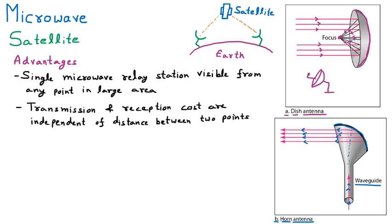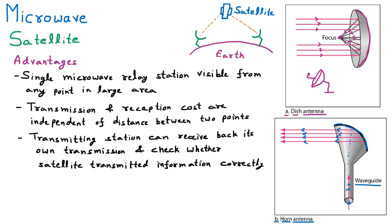Third advantage: the transmitting station can receive back its own transmission and check whether the satellite transmitted the information correctly. When I send signals to the satellite and it broadcasts them, those signals come back to my own antenna as well. So I can verify whether my channel or data was broadcasted properly, since I also receive what the satellite sends — this allows cross-checking whether the transmitted information is correct.